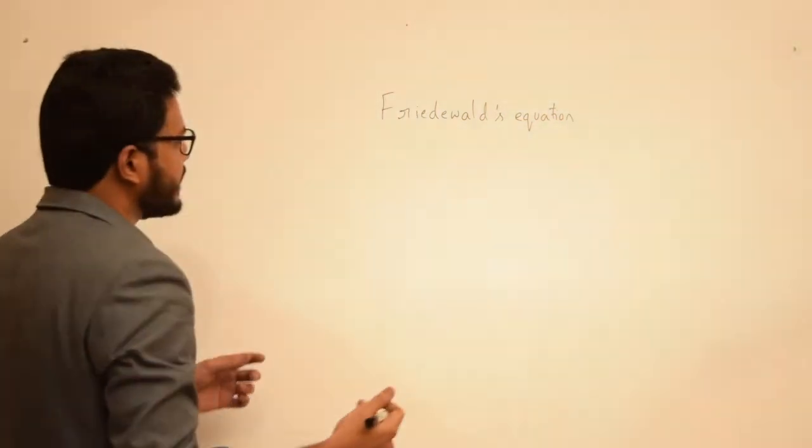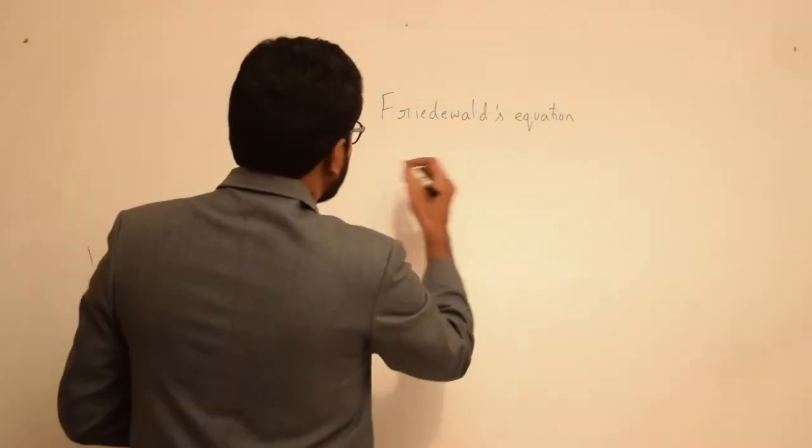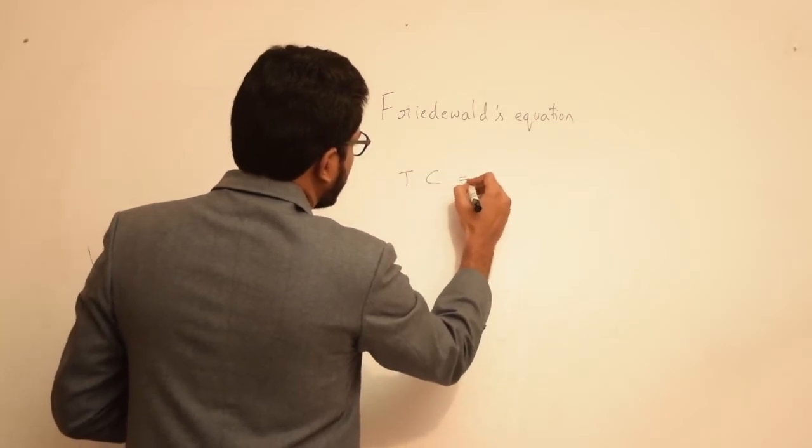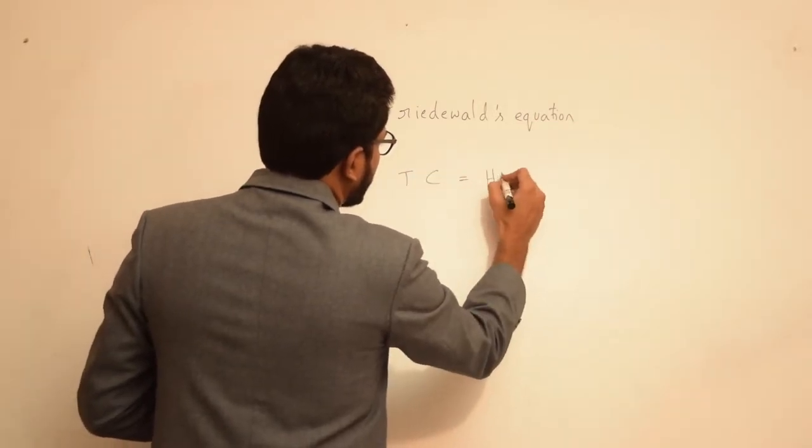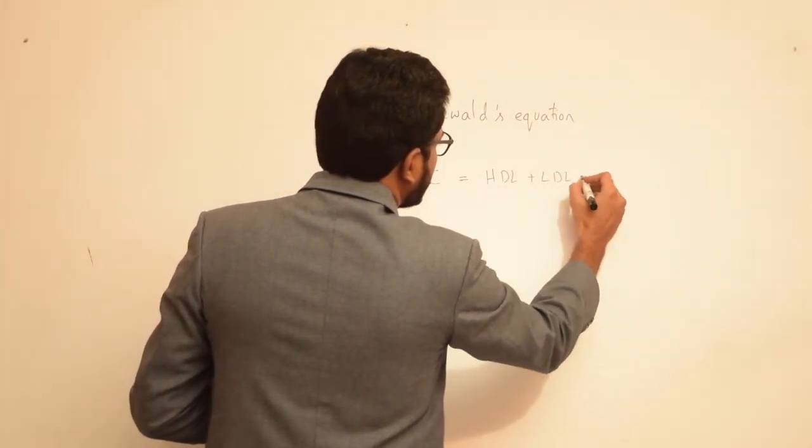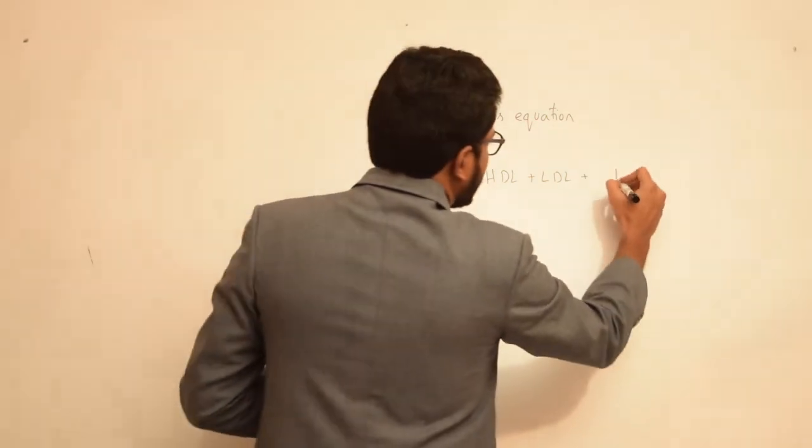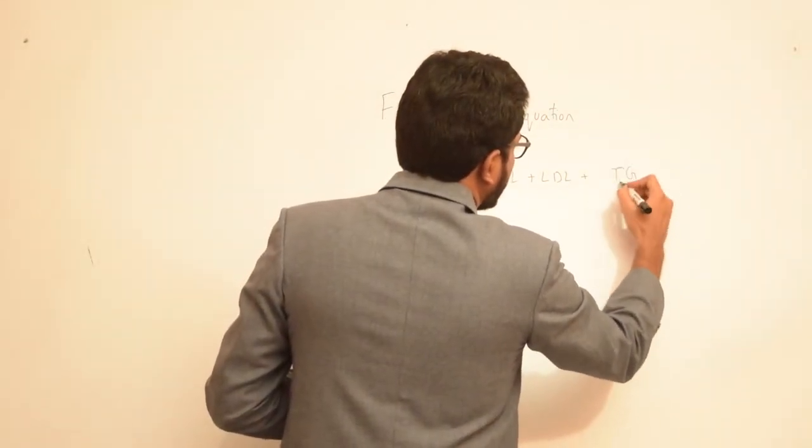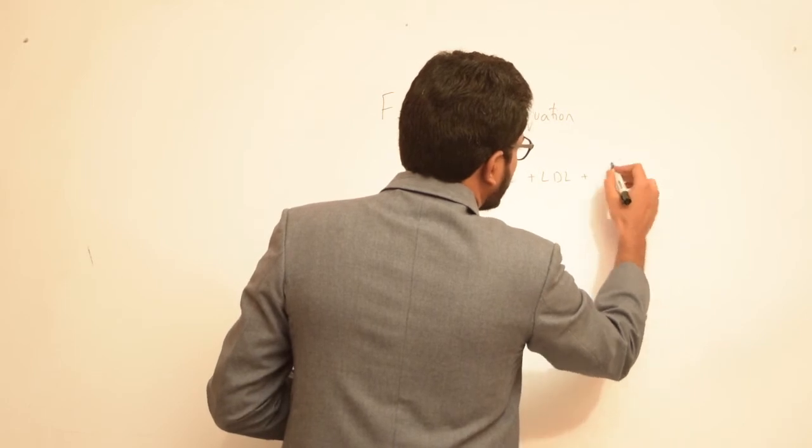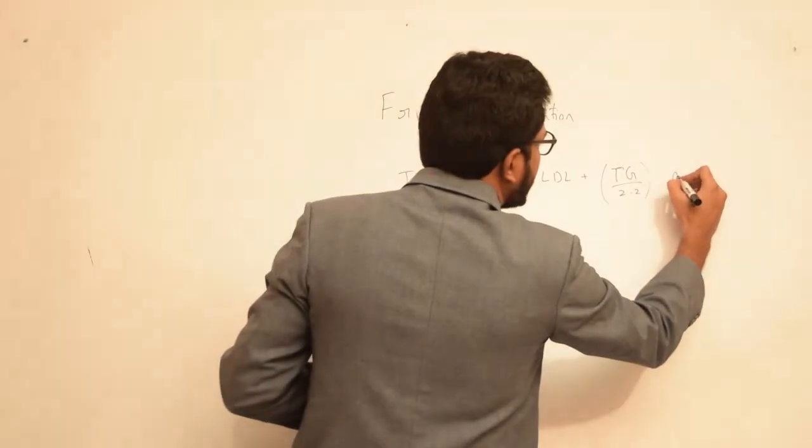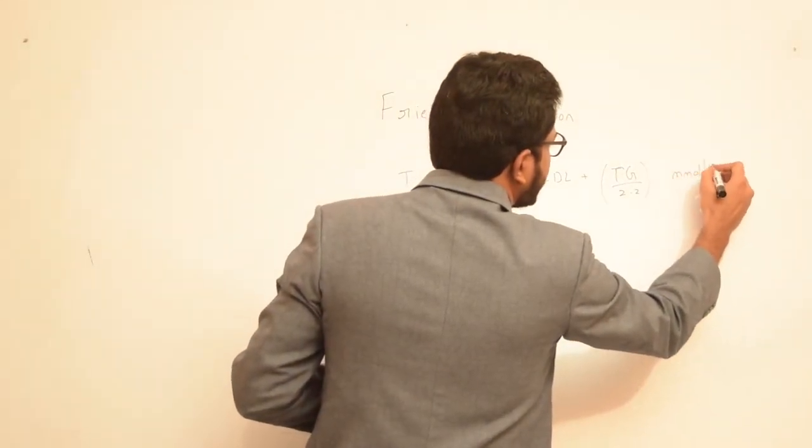So this helps us to evaluate LDL levels in the plasma using the following formula. The total cholesterol is equal to HDL plus LDL plus triglycerides divided by 2.2 if the units of measurement are in millimoles per liter.